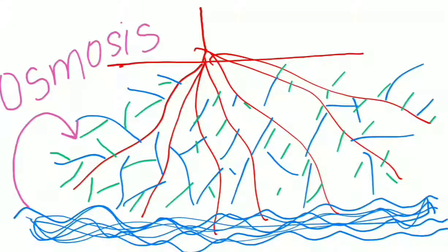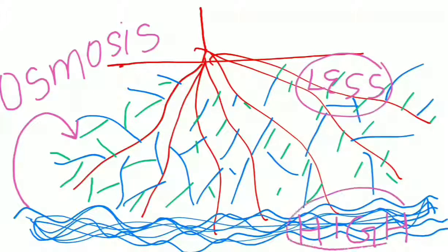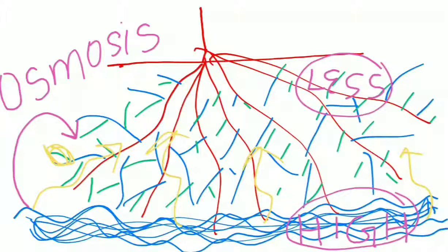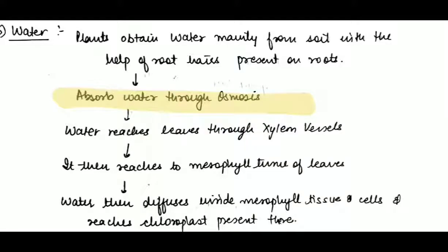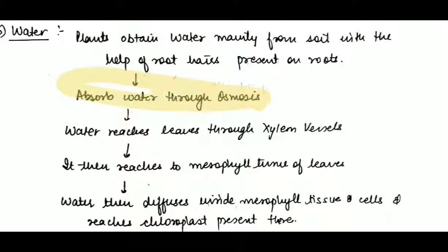Water is absorbed by the root hair by the process of osmosis. The soil has a high concentration of water, while the roots have only a little amount of water. So the water moves from the soil into the roots — the roots absorb this water from the soil through root hairs by the process of osmosis.